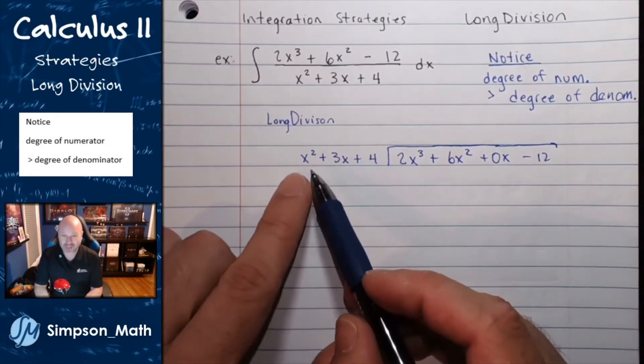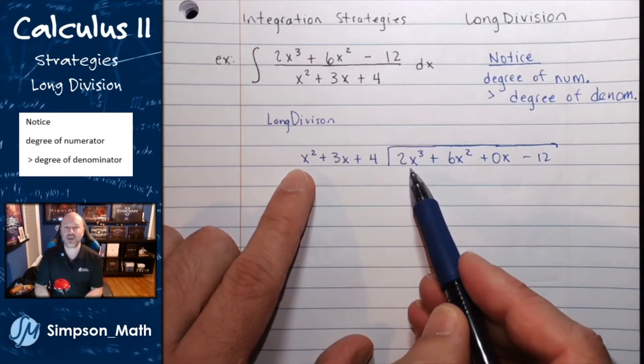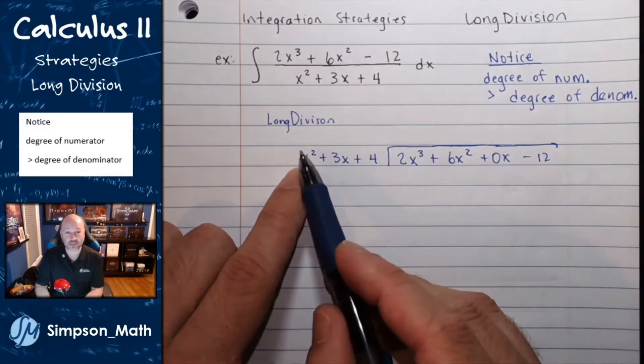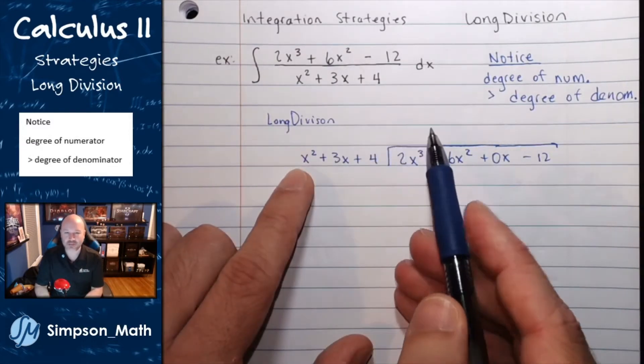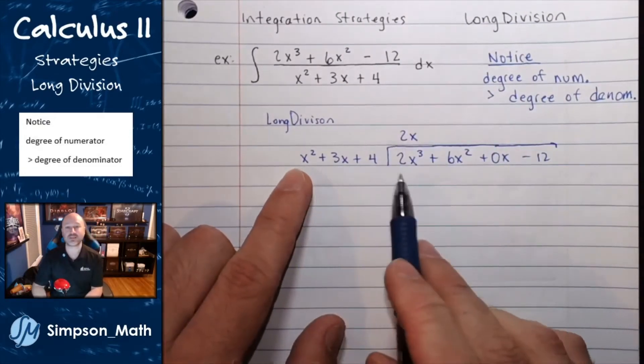This is x squared times what would give me 2x to the third power. x squared times 2x to the first power, that would give me 2x cubed.